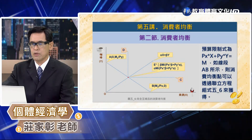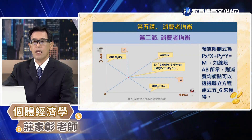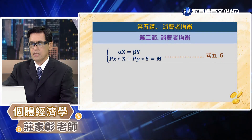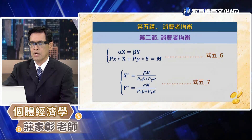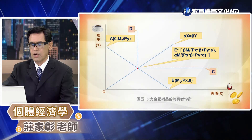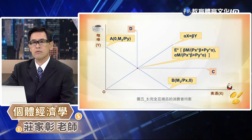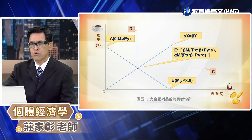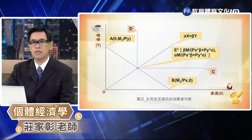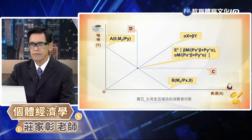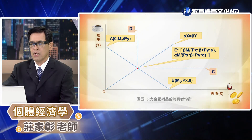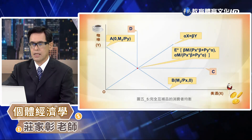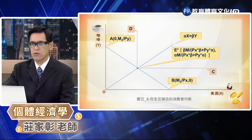從原點出發的射線 αX = βY 可以用來描述消費者在享用這兩種互補商品的消費習性。預算限制式是 Px×X + Py×Y = M，如線段 AB 所示。我們就可以透過聯立方程組5-6來獲得，並從方程組解出最適的消費組合點如公式4-5-7所示，圖形用圖5-5來表示。在完全互補的效用水準之下，出現的均衡點通常會在 L 型轉角的點上面。